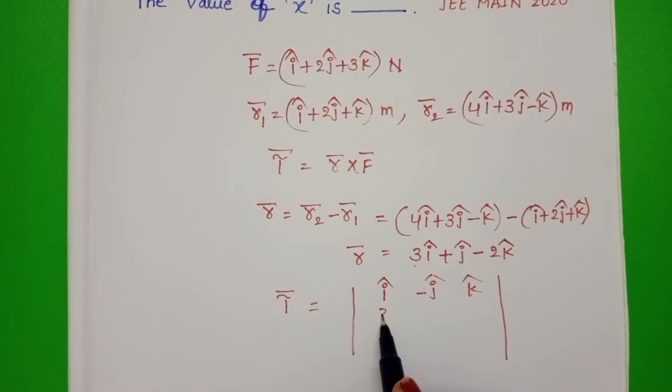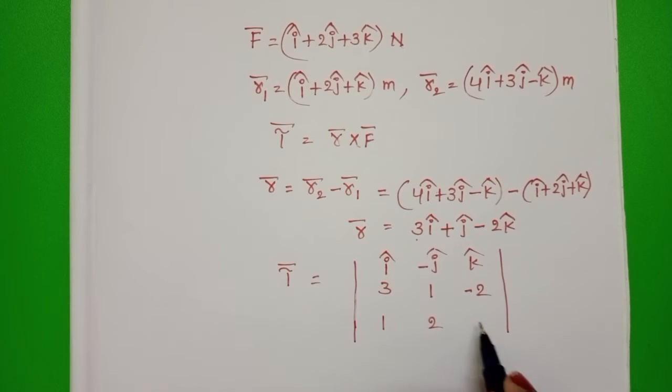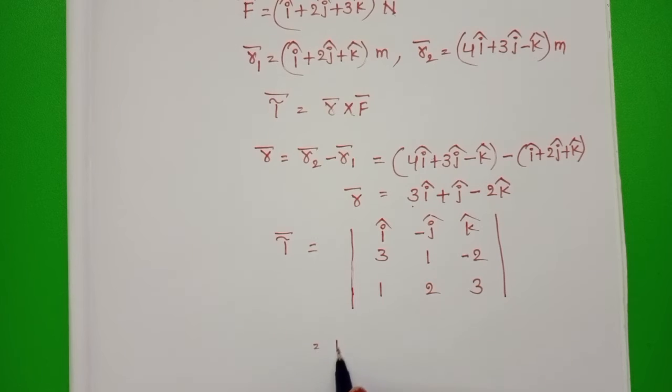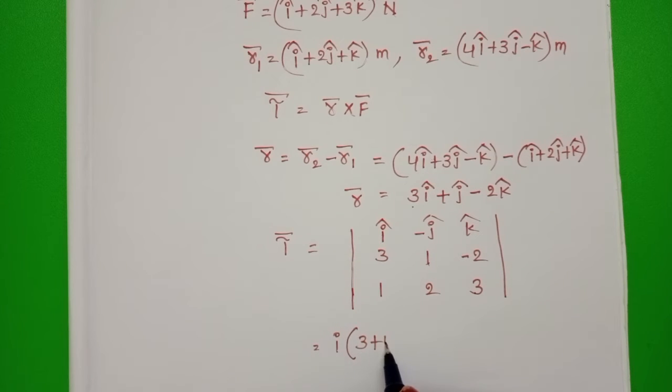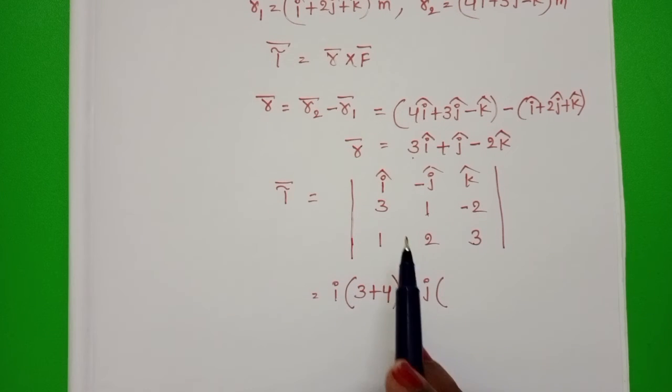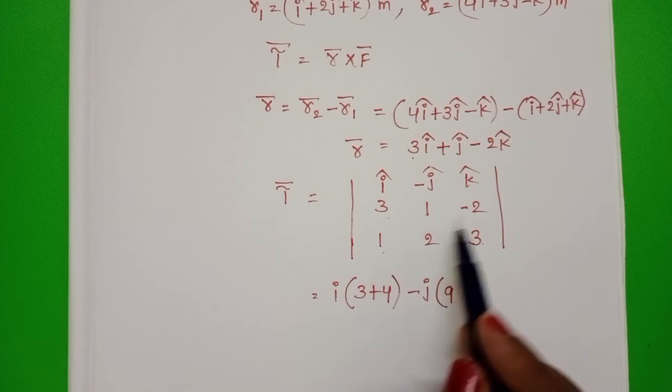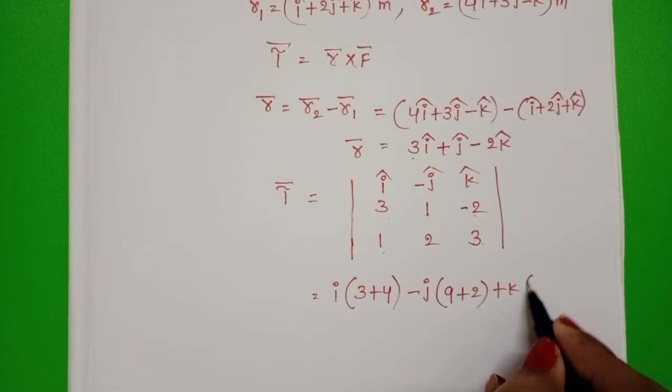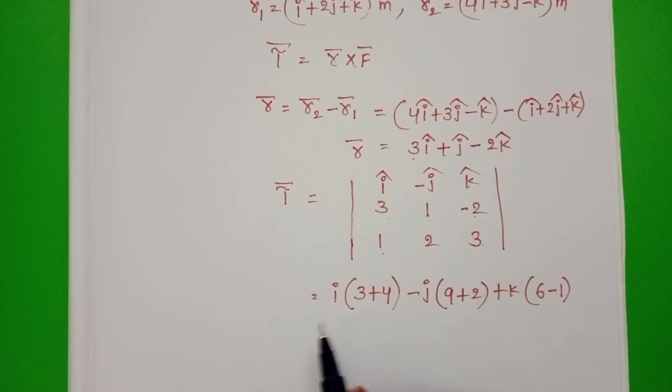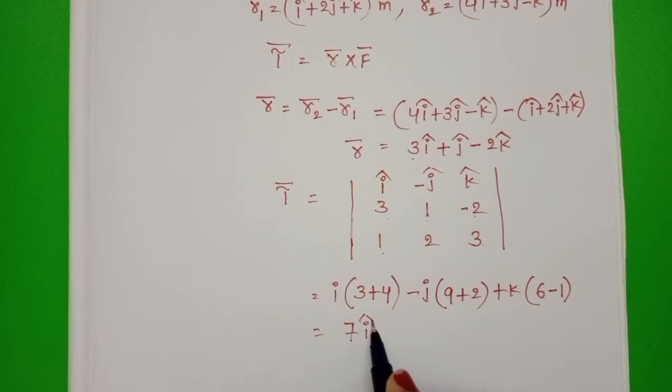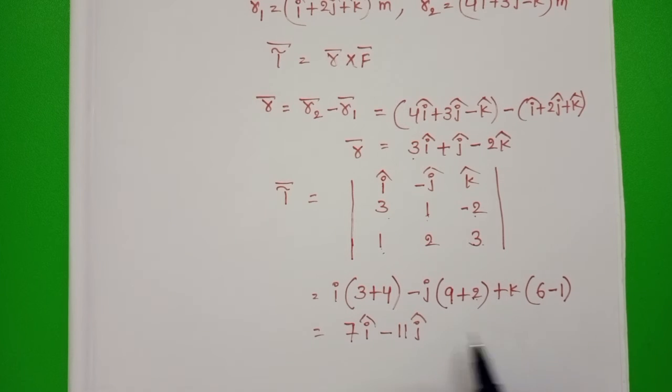First take position vector 3, 1, minus 2 and force 1, 2, 3. i into 3 plus 4, minus j into 9 plus 2, plus k into 6 minus 1. This equals 7 i cap minus 11 j cap plus 5 k cap. This is torque.